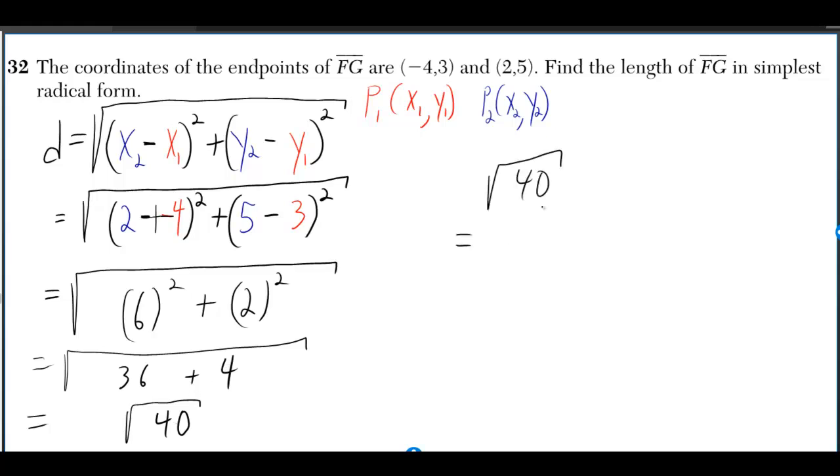But we need this in simplest radical form. We can break it down to root 4, root 10. Root 4 is just 2, and I'll keep the root 10. So even though 2 root 10 is more writing than root 40, we say it's simpler because the number underneath the root is smaller.